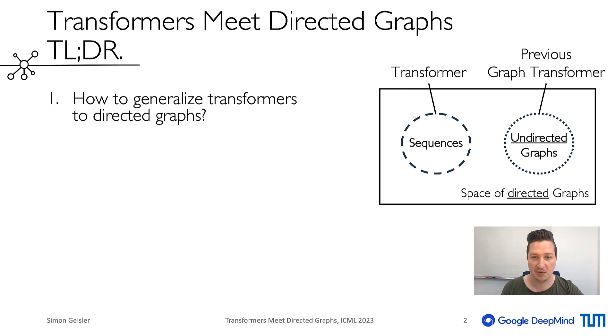Transformers were originally proposed for sequences, which is a special type of directed graph. Most graph transformers, on the other hand, only work on undirected graphs.